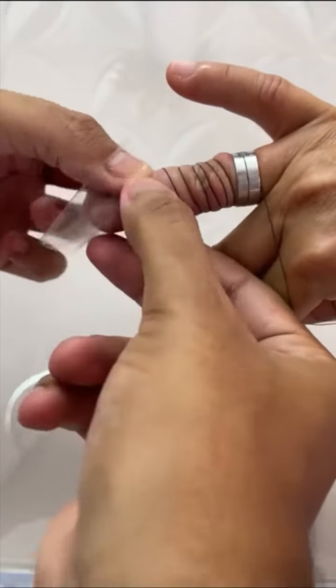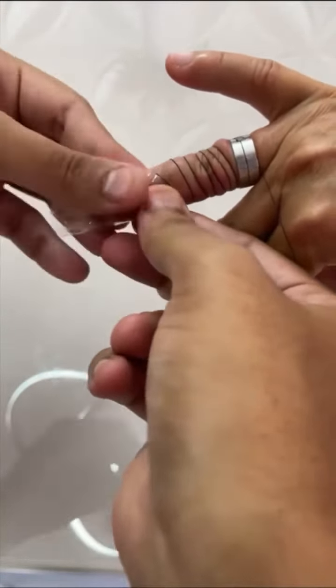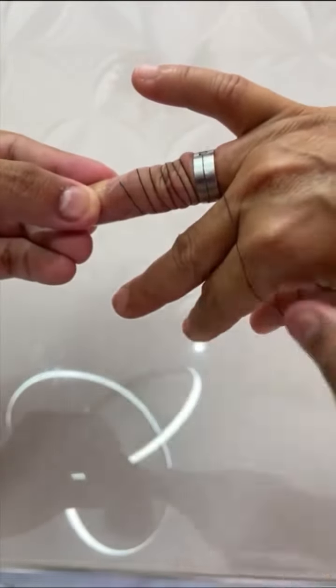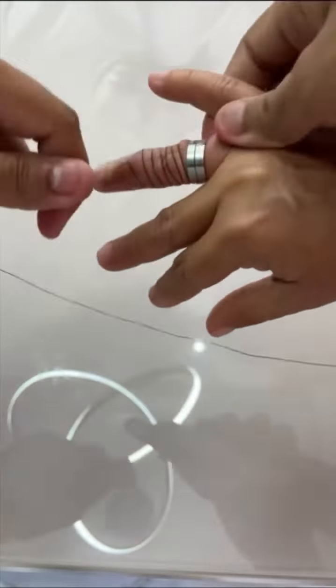Now, with the help of some adhesive tape, let's glue the end of the thread to the tip of our finger. Once this is done, untie the thread wrapped around your thumb.